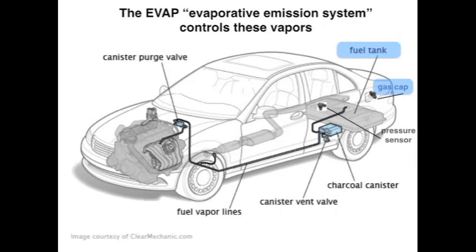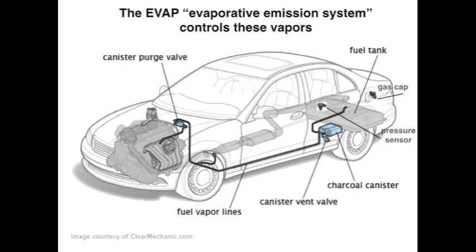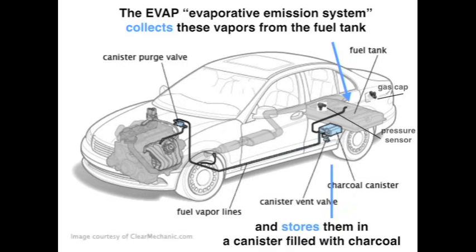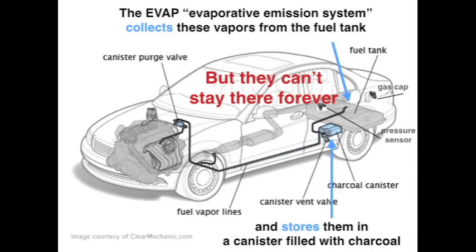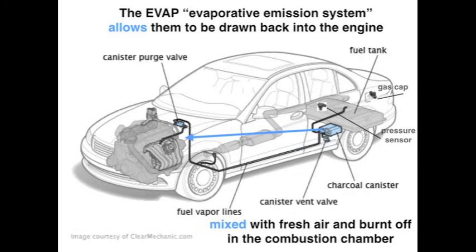The basic elements are the fuel tank, the gas cap, the fuel tank pressure sensor, the charcoal canister, canister vent valve, all of the lines that connect everything, and the canister purge valve. The EVAP system collects vapors from the fuel tank and stores them in the charcoal canister, but they can't stay there forever. So the system also allows them to be drawn back into the engine, mixed with fresh air, and burned off in the combustion chamber.